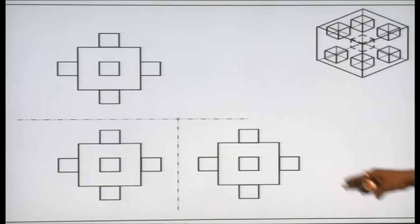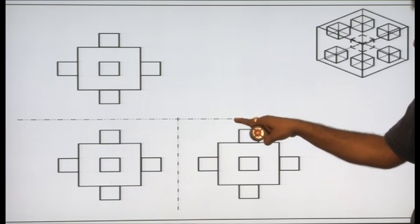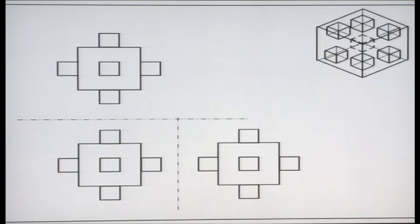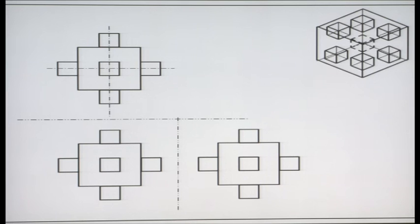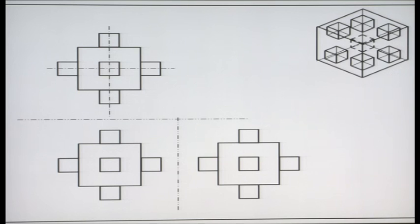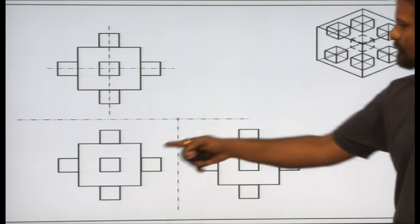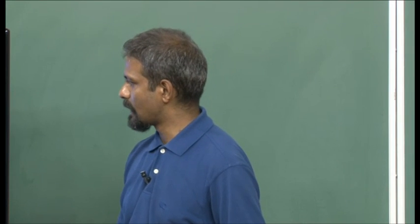Watch out for the conventions that I use. I use dash dot dot dash dot dot to represent the hinge lines. This object is symmetric both along the vertical as well as along the horizontal, so I am using dash dot dash dot this convention to represent the line of symmetry. Usually it is also used to represent the center line, since these two are also symmetric about the horizontal and the vertical.